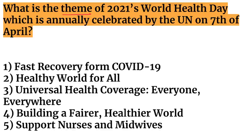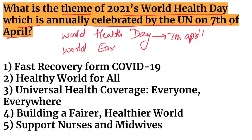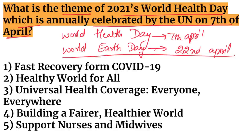Next question: what is the theme of the 2021 World Health Day, annually celebrated by the UN on 7th April? World Health Day is on 7th April, and World Earth Day is on 22nd April. The theme of World Health Day 2021 was 'Building a Fairer, Healthier World.'